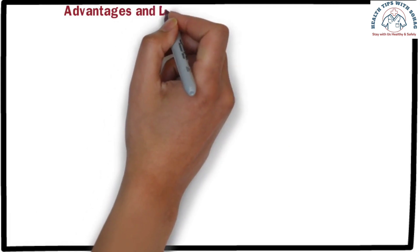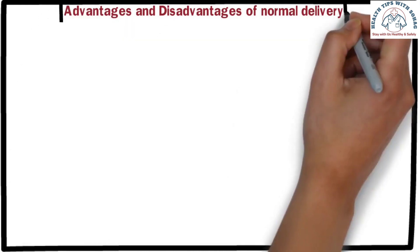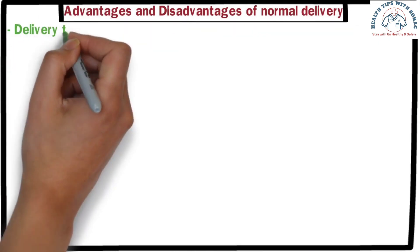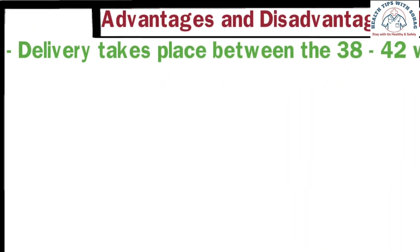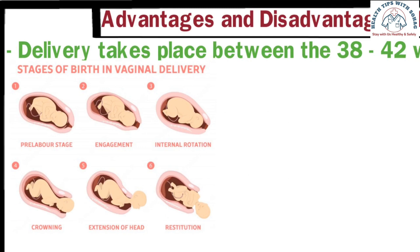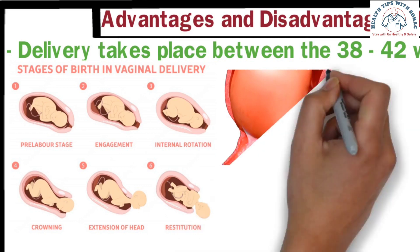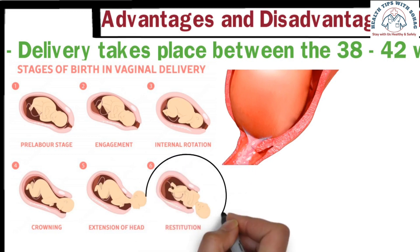Before discussing the advantages and disadvantages of normal delivery, we need to understand how a normal delivery occurs. Typically, normal delivery takes place between 38 to 42 weeks of pregnancy. At any time within this period, labor pain can start. The uterine contractions gradually intensify, and along with this the cervix begins to dilate. As the cervix dilates, you might notice the release of some clear fluid along with a small amount of blood. Alongside the cervix opening, the baby's head starts to move downward, completing the delivery.